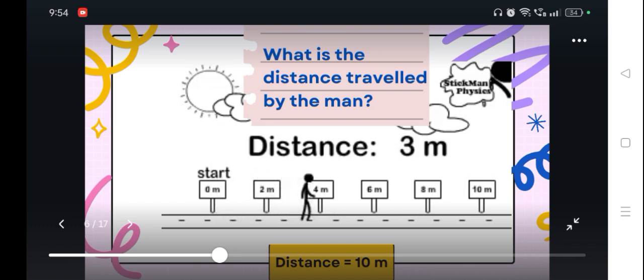What is the distance traveled by the man? Since he is moving 6 meters forward and goes back, stops at 2 meter mark, that means 6 meters plus 4 meters as he took a step backward from 6 to 2 meters. So 6 plus 4 meters, the distance traveled by the man is equal to 10 meters.